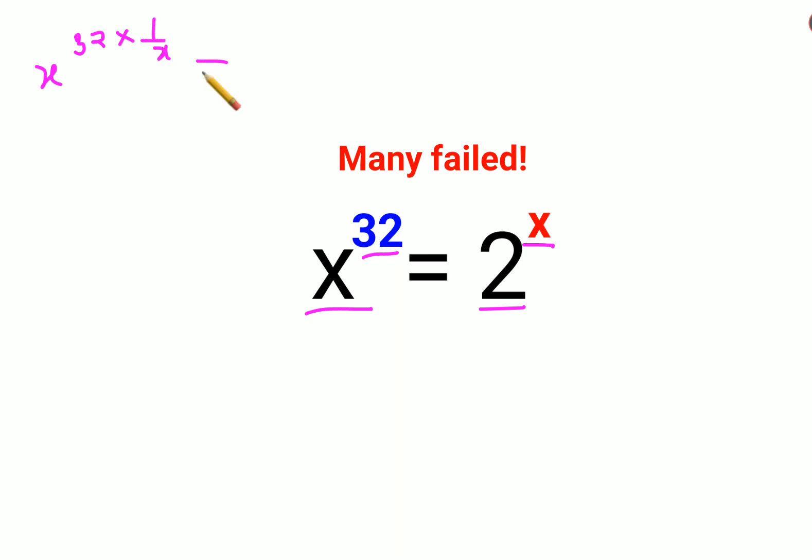Basically you are multiplying the index by 1 upon x. At the same time, I will try to take the 32nd root, which is dividing by 32 or multiplying by 1/32 on both sides. So in one single step I could shift all the variables on one side and all the numbers on another side.